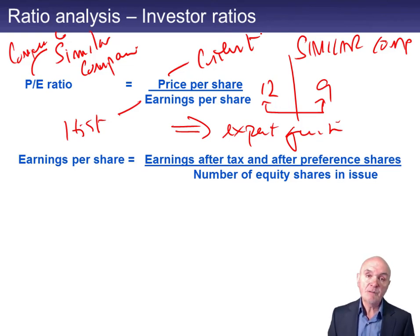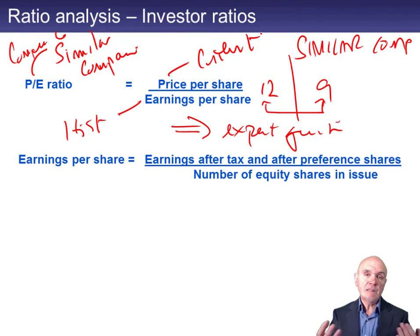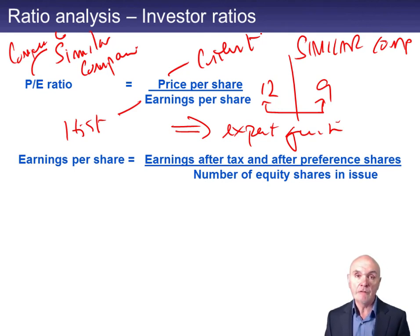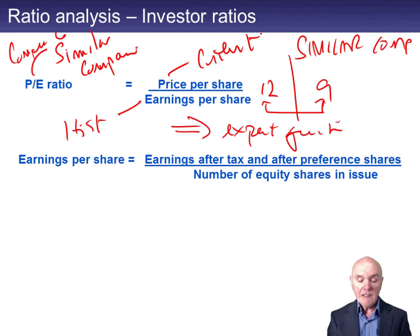And then there is earnings per share — people like to see that going up. This is more fundamental than dividends per share. The directors can increase and decrease dividends per share with a great deal of latitude, but earnings per share is not something which directors have particular control over. People like to see earnings per share increase each year — it effectively means the company is really doing pretty well.